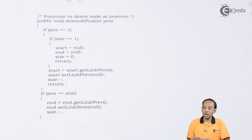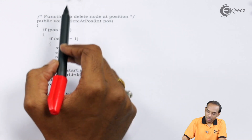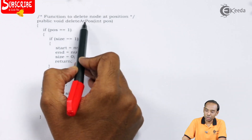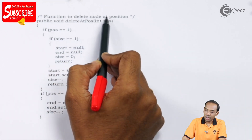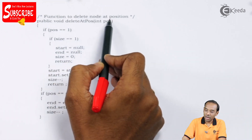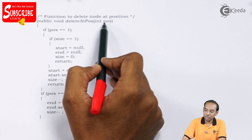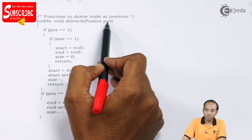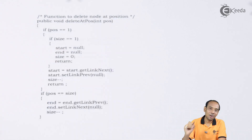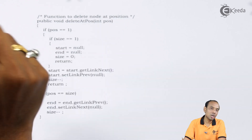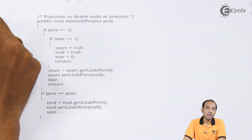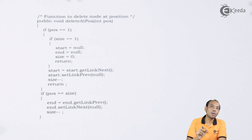We have defined a function called delete_at_position. We are going to have the value where the user wants to delete — that position is going to be stored in the variable called position.